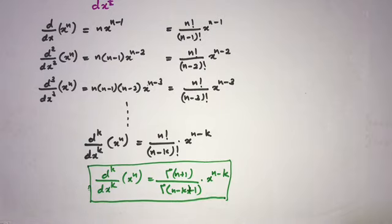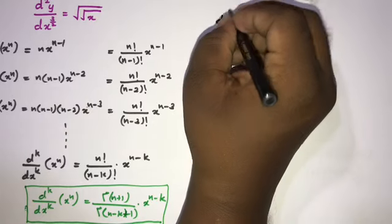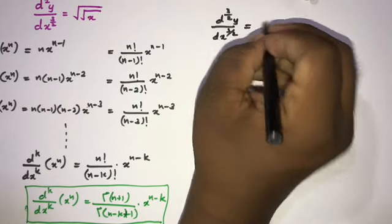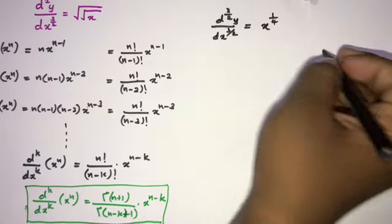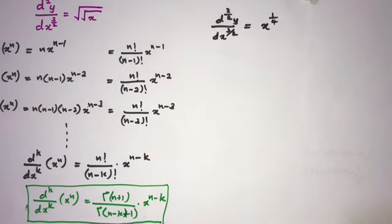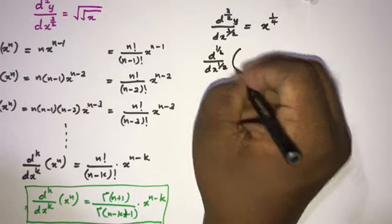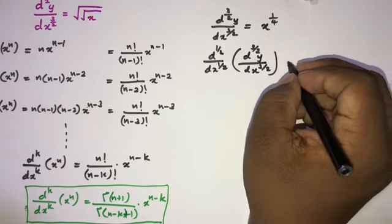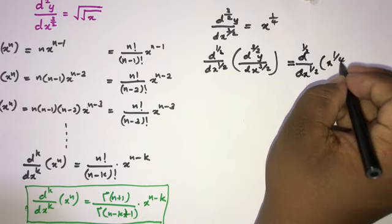Now applying this to our question: d^(3/2)y / dx^(3/2) = x^(1/4), since √(√x) = x^(1/4). We take the half-derivative of both sides, writing D^(1/2) of [d^(3/2)y / dx^(3/2)] = D^(1/2) of x^(1/4).